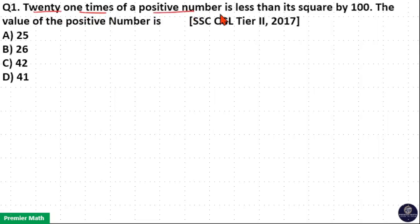21 times of a positive number is less than its square by 100. The value of the positive number is, let us consider N as the positive number. Then 21 times of this positive number is less than its square.